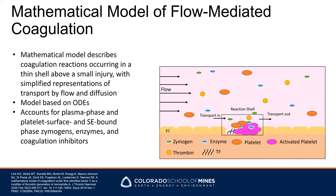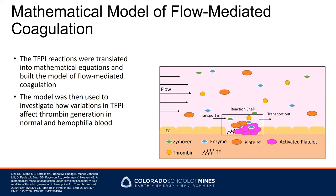The model we are using was built on the base of a coagulation flow model. This model describes the tissue factor pathway of coagulation, taking into account the plasma phase, membrane-bound phase, zymogens, enzymes, coagulation inhibitors, and platelets. We assume that all reactions are happening in a thin shell right above the injury site, so we can ignore spatial concentration differences and solve the system with ODE functions. TFPI reactions were translated into mathematical equations, and the model was used to investigate how variations in TFPI affect thrombin generation in normal and hemophilia A blood.